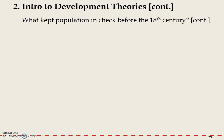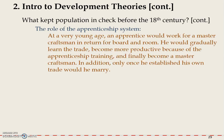Malthus also discussed a very interesting thing: the apprenticeship system. He found this system mattered in terms of population growth before the 18th century, at least in Great Britain. He said that at a very young age, an apprentice would work for a master craftsman in return for board and room, gradually learn the trade, become more productive, and finally become a master craftsman.